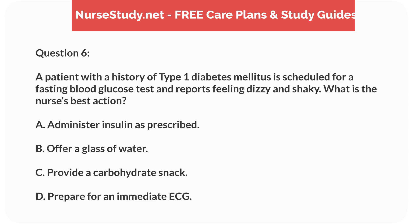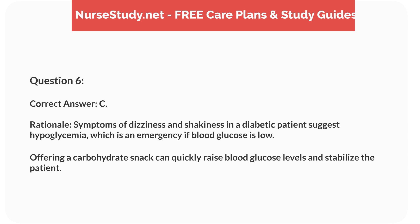Question 6. A patient with a history of type 1 diabetes mellitus is scheduled for a fasting blood glucose test and reports feeling dizzy and shaky. What is the nurse's best action? A. Administer insulin as prescribed. B. Offer a glass of water. C. Provide a carbohydrate snack. D. Prepare for an immediate ECG. Correct answer: C. Rationale: symptoms of dizziness and shakiness in a diabetic patient suggest hypoglycemia, which is an emergency if blood glucose is low. Offering a carbohydrate snack can quickly raise blood glucose levels and stabilize the patient.